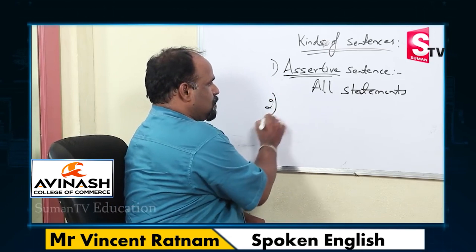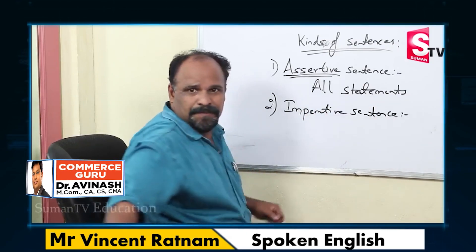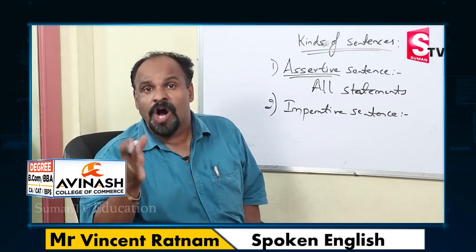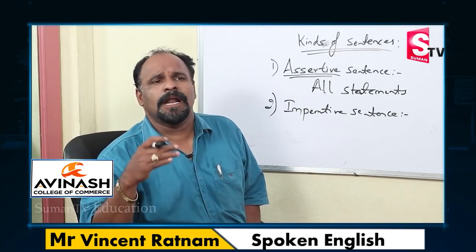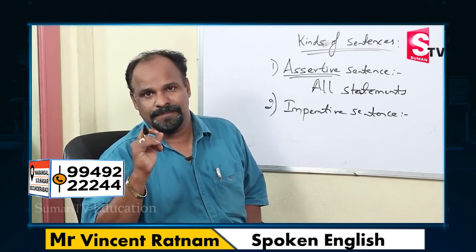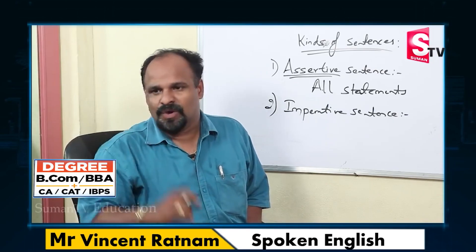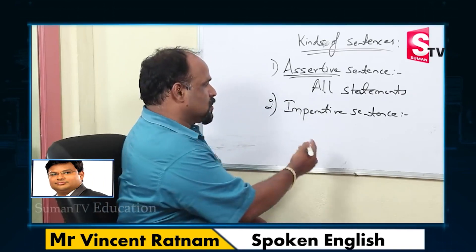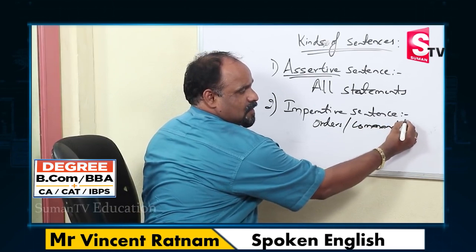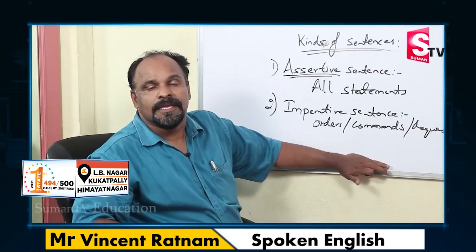The second kind is the imperative sentence. What is the meaning of imperative sentence? An imperative sentence is a command, order, or request. For example, orders: 'Shut your mouth,' 'Keep quiet,' 'Get out of my sight.' And for requests: 'Can you please give me some water?' 'Please don't make noise.' So imperative sentences include orders, commands, or requests.